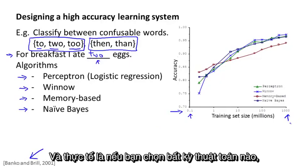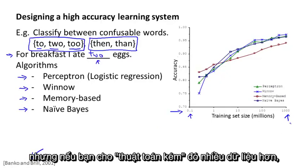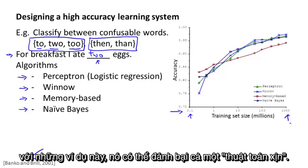And in fact, if you pick any algorithm, maybe pick a quote 'inferior algorithm', but if you give that quote 'inferior algorithm' more data, then from these examples it looks like it will most likely beat even a quote 'superior algorithm'.